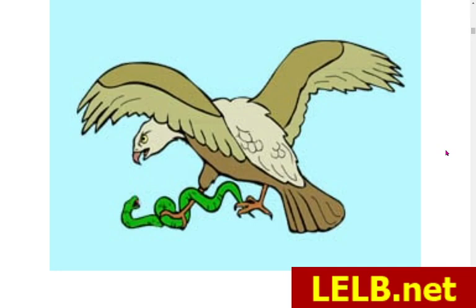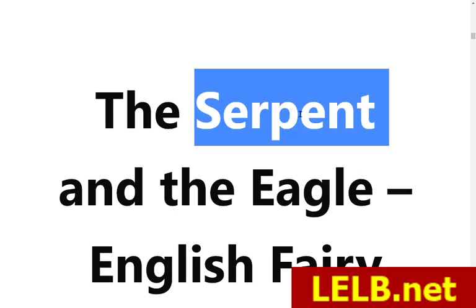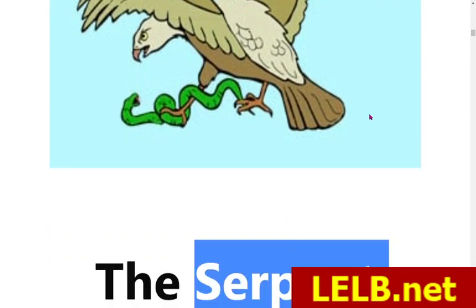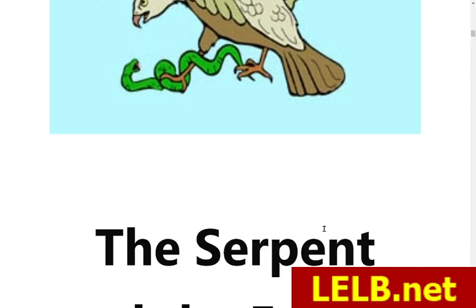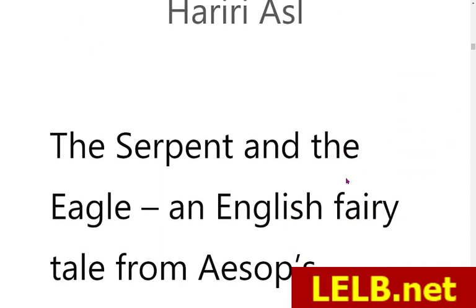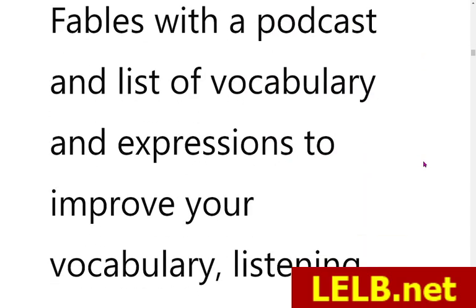Hello everybody and welcome to LiLB Society and my YouTube channel. This time I'm going to narrate a short fairy tale. The title of this fairy tale is 'The Serpent and the Eagle.' Serpent means snake. This story has been adopted from the Gutenberg Project and falls into the public domain. It was written by Aesop, dating back 2600 years ago. Aesop was a Greek storyteller, a raconteur.